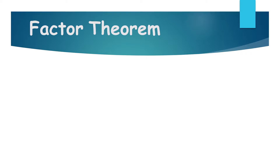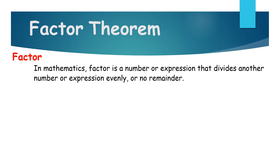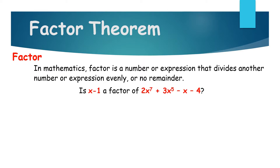Before I proceed, let's review first the definition of Factor. So in mathematics, a factor is a number or expression that divides another number or expression evenly or with no remainder. For example, 3 is a factor of 6 since you can divide 6 by 3 without remainder. The same thing will apply to your polynomial — if you can divide a polynomial without remainder, then your divisor is a factor of your dividend.